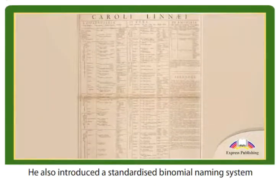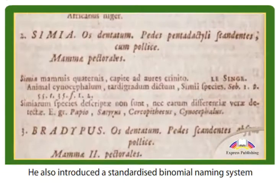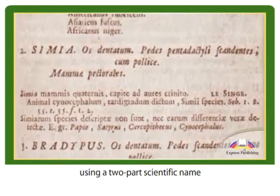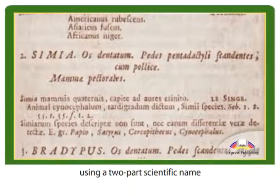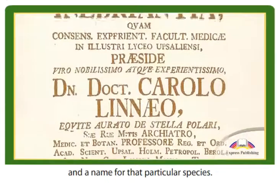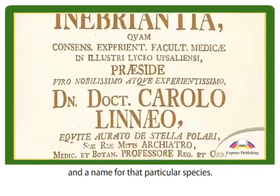He also introduced a standardised binomial naming system in the 18th century, using a two-part scientific name made up of the genus and a name for that particular species.